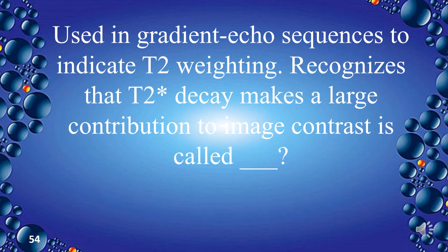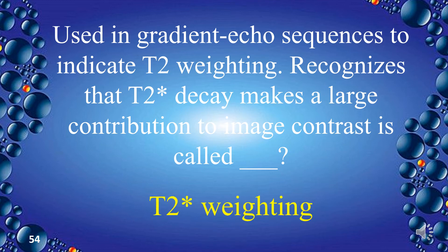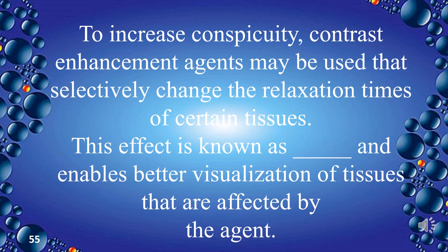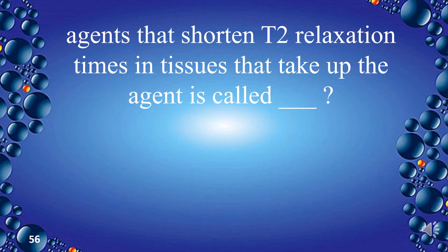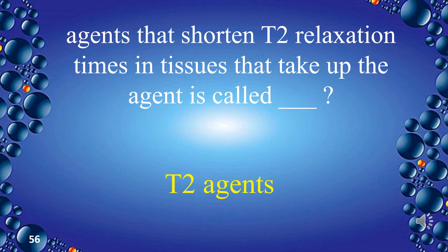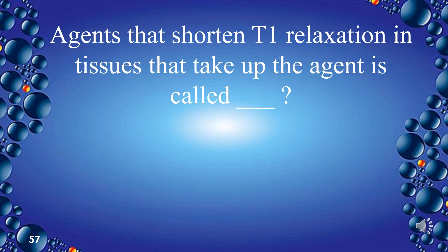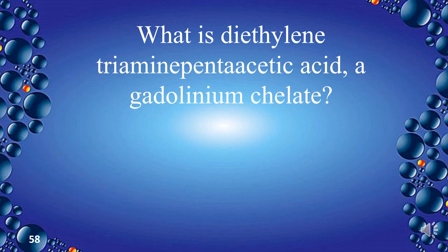T2 star weighting is used in gradient echo sequences to indicate T2* weighting, recognizing that T2 decay makes a large contribution to image contrast. Contrast enhancement agents used to increase conspicuity selectively change relaxation times of certain tissues — this effect is called relativity. Agents that shorten T2 relaxation times are called T2 agents. Agents that shorten T1 relaxation times are called T1 agents. Diethylene triamine pentaacetic acid, a gadolinium chelate, is called DTPA.